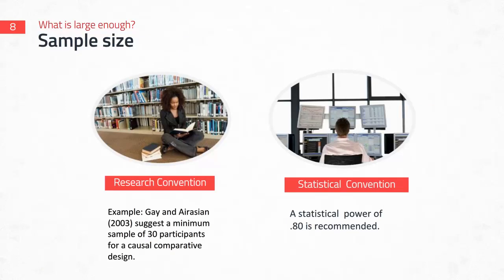In addition to these elements, you also need to talk about sample size. In a quantitative research plan, it's desirable to have a large sample size — large enough to ensure that your research is valid and that you have sufficient statistical power to make conclusions from your results. Your proposed sample size needs to meet research conventions. For example, research text writers suggest a minimum of 30 participants for a causal comparative study, and Creswell, Gall and Borg, and many others recommend a minimum of 15 for experimental studies.